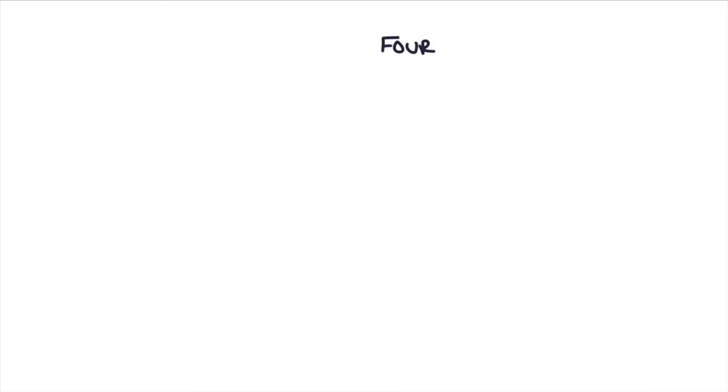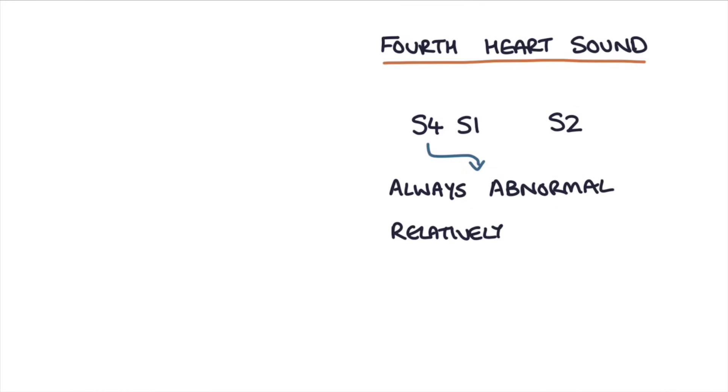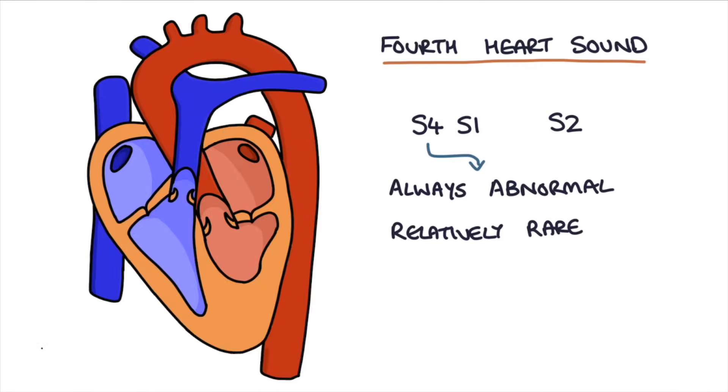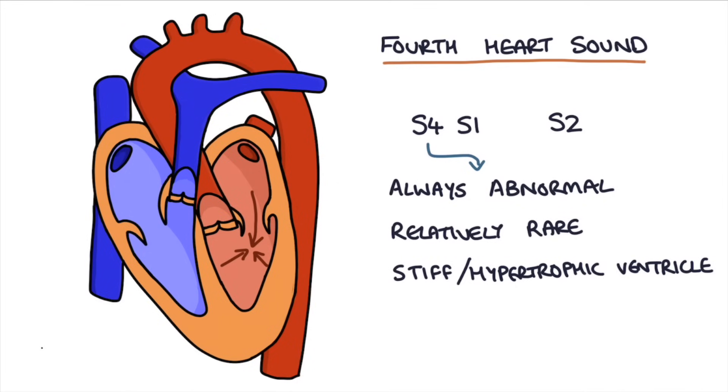Next, let's talk about the fourth heart sound, and we call this S4, and this is heard directly before S1. S4 is always abnormal, and it's relatively rare to hear. What this indicates is a really stiff or hypertrophic ventricle, and the sound is caused by turbulent flow from an atria that's contracting against a ventricle that is non-compliant or doesn't want to fill with blood. So the ventricle is really stiff, the atria is trying to force blood in, and this is causing turbulent flow.